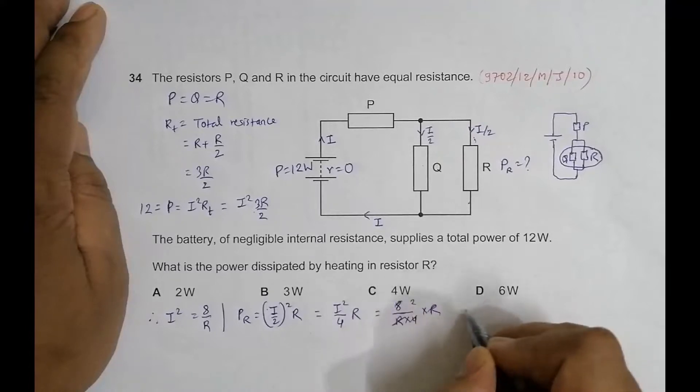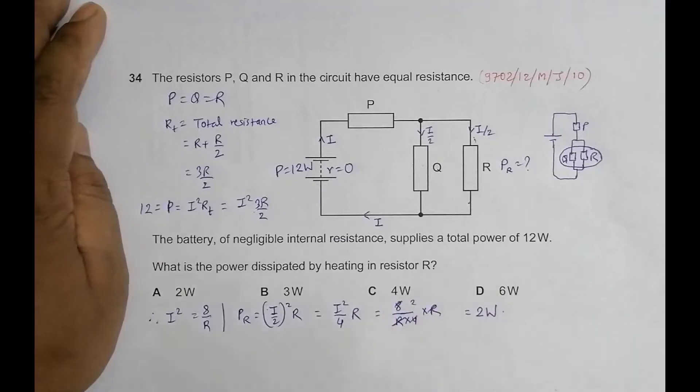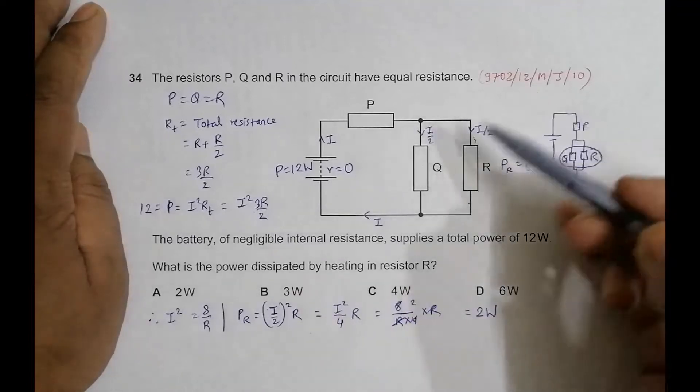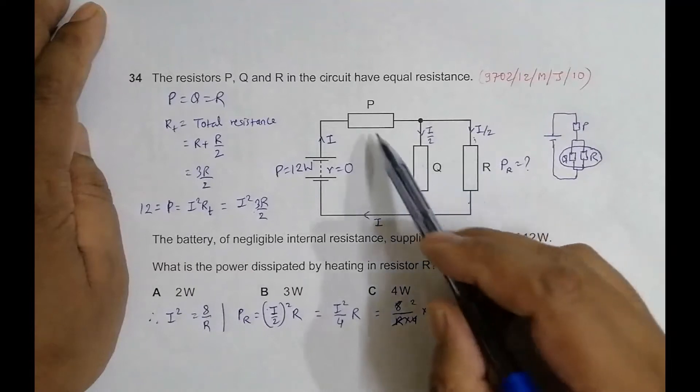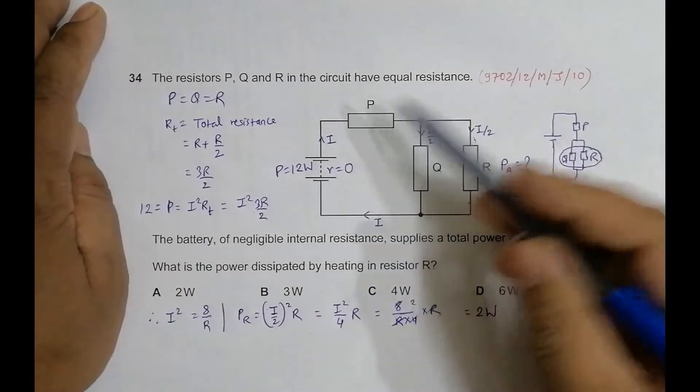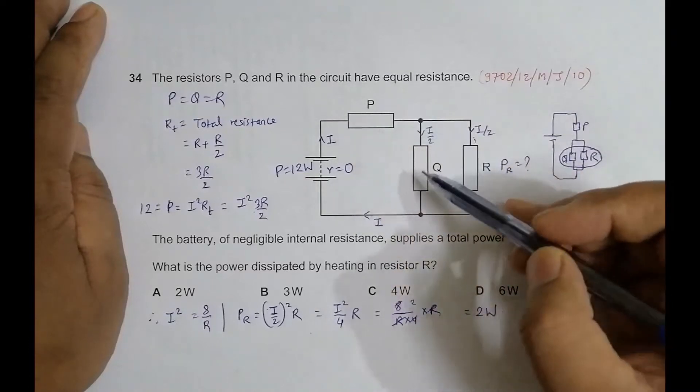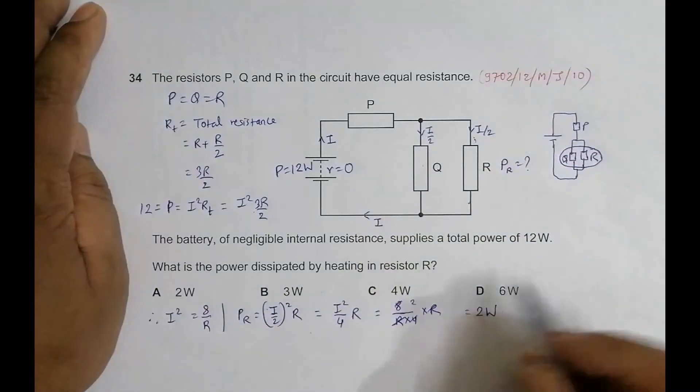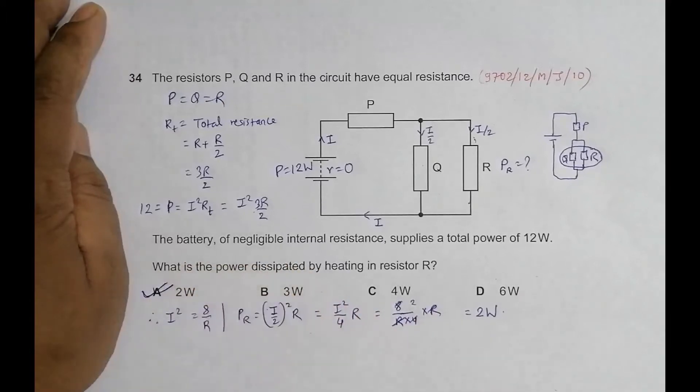So the answer should be equal to 2 watts here. In the same manner, again it will be 2 watts here, 2 and 2. If you want to find this, we have to do I² into R, so that's why 2 watts, 2 watts. The answer is 2 watts, which is in choice number A. So the correct answer is choice number A.